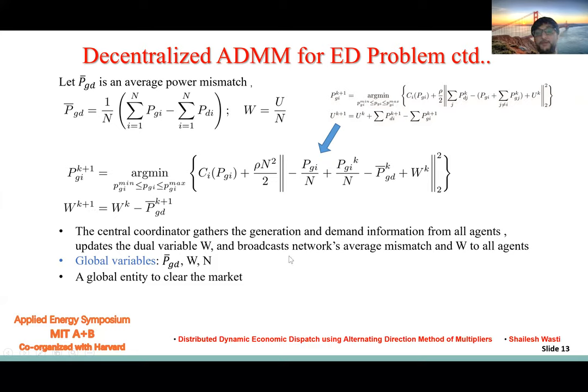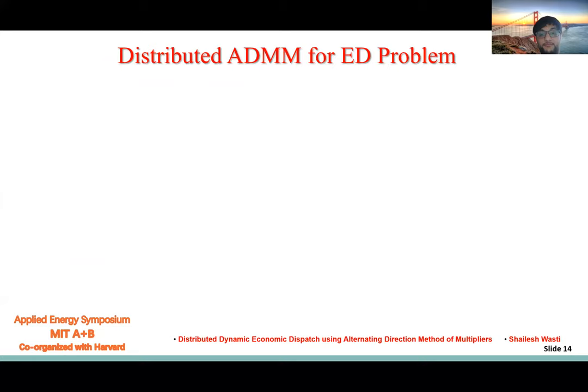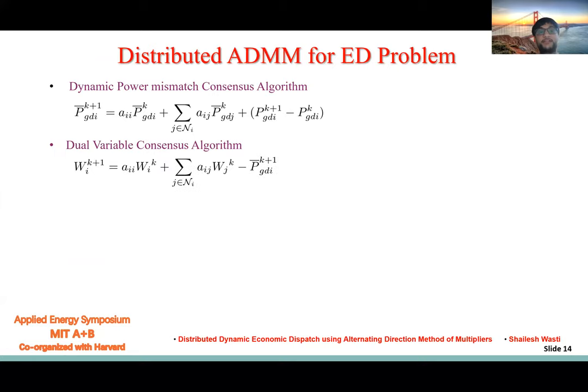Now we are interested in a distributed paradigm. For that, we should find a way to localize these three global variables.